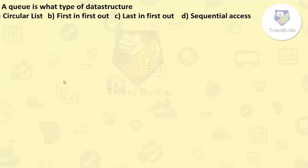Next question: a queue is what type of a data structure? The options are: A) circular list, B) first in first out, C) last in first out, and D) sequential access. The answer here is B: first in first out. A, C, and D are the wrong options.